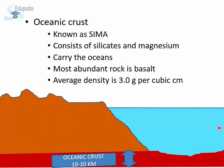The oceanic crust is also known as SIMA, as it consists mainly of silicate and magnesium. The oceanic crust carries the ocean and is also beneath the continental crust. The most abundant rock in the oceanic crust is basalt. The average density of the oceanic crust is 3 grams per cubic centimeter, and the thickness is between 10 to 20 kilometers on average.